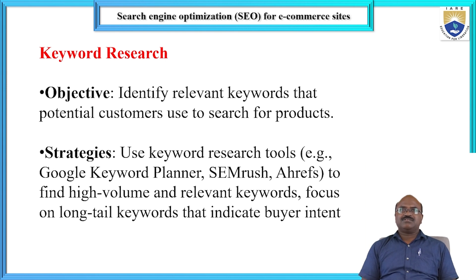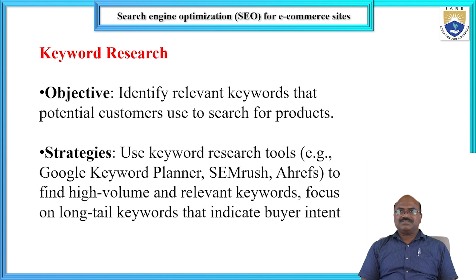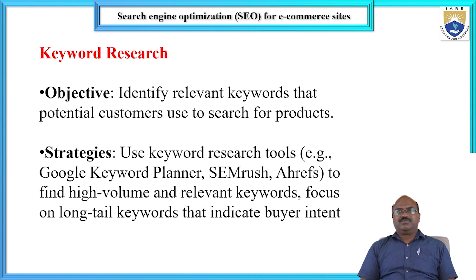Having different types of strategies is also important. The basic strategy is to use a keyword research tool. Many techniques are available — for example, Google Keyword Planner, SEMrush, or Ahrefs. To find high-value relevant keywords, focus on long-tail keywords that indicate buyer intent. The use of a keyword research tool is the most important thing for any online business, especially in Google.